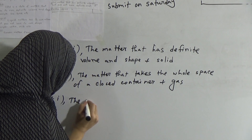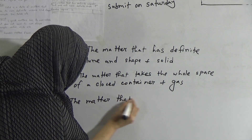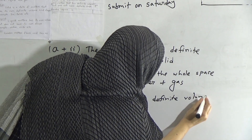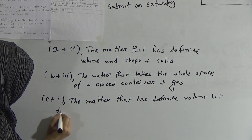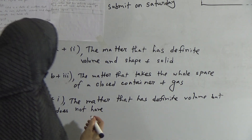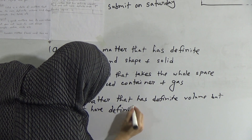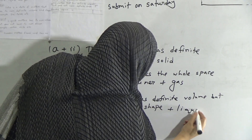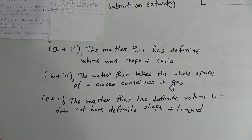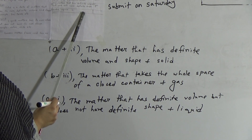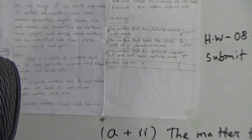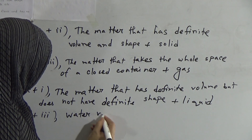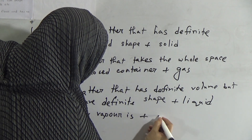The matter that has definite volume but does not have definite shape matches with number one — liquid. And last, answer D — water vapor is a gaseous state, so it matches with number three. Write D plus three: water vapor is gas.